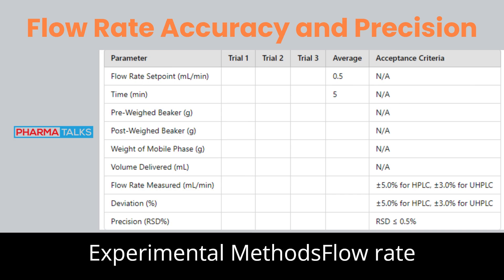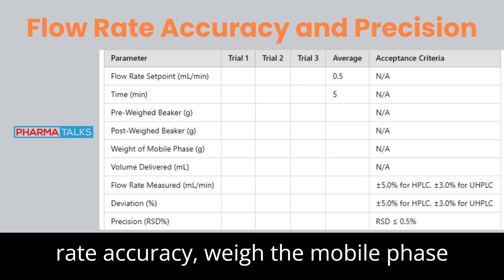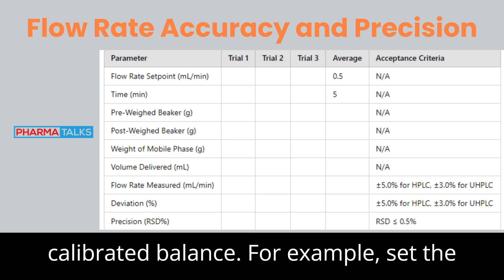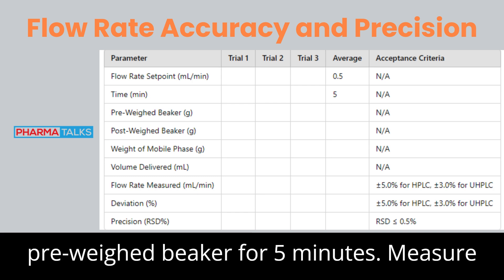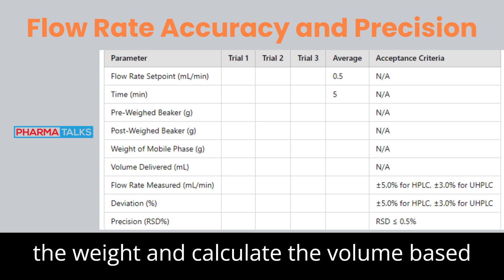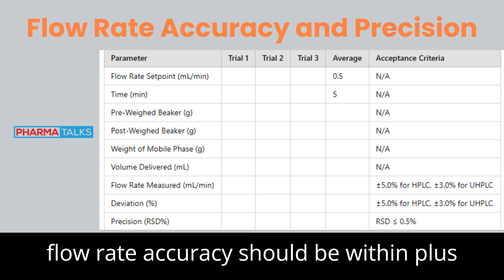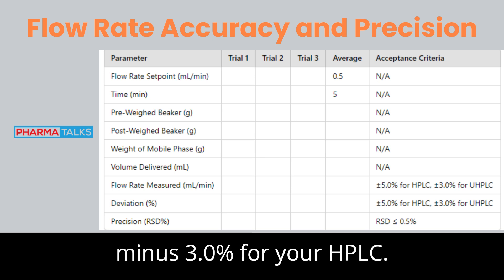Experimental Methods: Flow Rate Accuracy and Precision. To assess flow rate accuracy, weigh the mobile phase delivered over a specific time using a calibrated balance. For example, set the flow rate to 0.5 mL per minute and collect the mobile phase in a pre-weighed beaker for 5 minutes. Measure the weight and calculate the volume based on the known density of the solvent. Flow rate accuracy should be within ±5.0% for HPLC and ±3.0% for UHPLC.